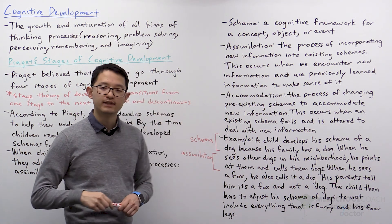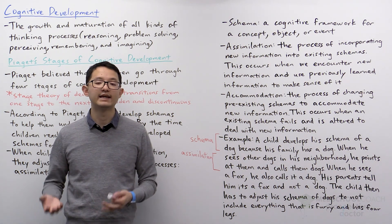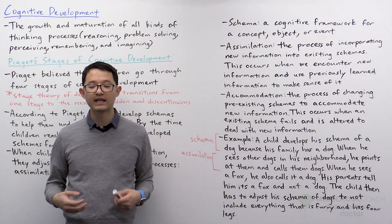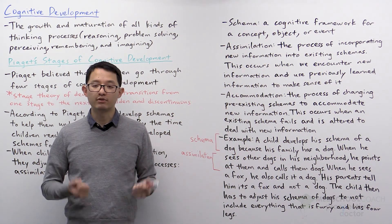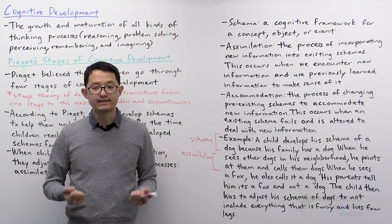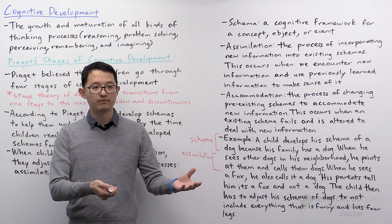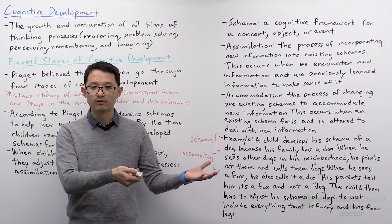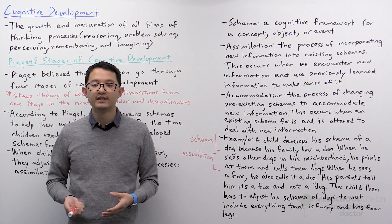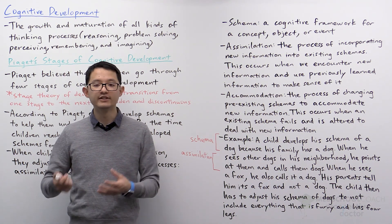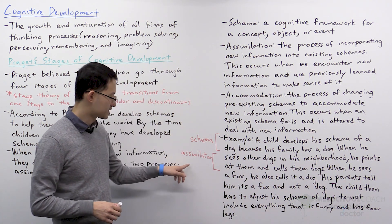In this case, the child is encountering new information — the other dogs in his neighborhood that he hasn't seen before. When he sees this new information, he draws on his pre-existing schemas to see which ones they fit into. He notices that these other things look similar to his schema of a dog, so he assimilates them into that schema and also calls them dogs. That's assimilation.